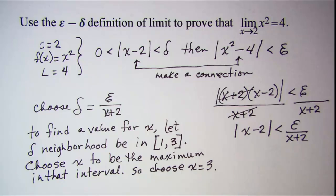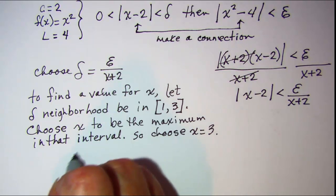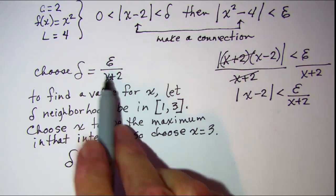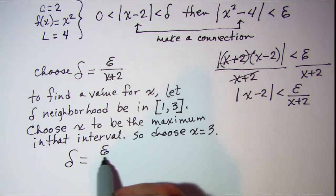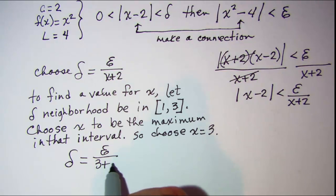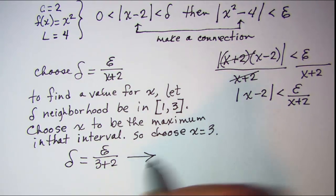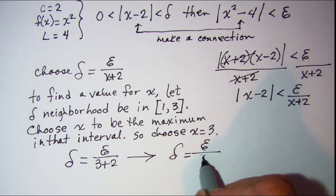That means then that delta will be equal to epsilon over 3 plus 2, or delta will be epsilon over 5.